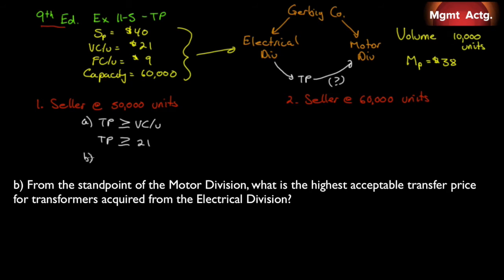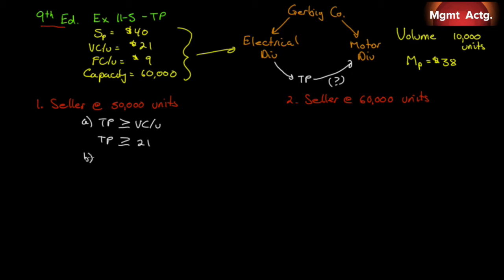Requirement 1B: from the standpoint of the motor division, what is the highest acceptable transfer price for transformers acquired from the electrical division? The motor division is already paying $38, so they're not going to pay more than $38. Therefore, the transfer price must be less than or equal to $38.